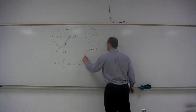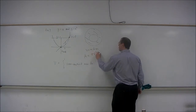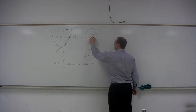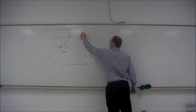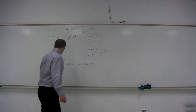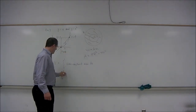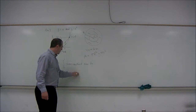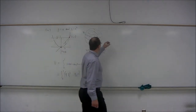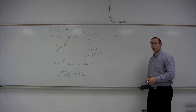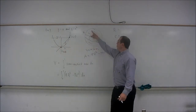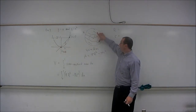The area of the washer is the area of the outer circle minus the area of the inner circle. The inner circle has a radius of lowercase r, and the outer circle has a radius of capital R. So our volume is going to be the integral from 0 to 1 of pi times big R squared minus pi times little r squared dx. The challenge is to express big R and little r in terms of x.